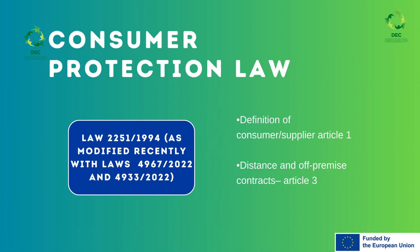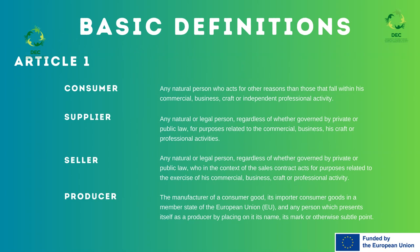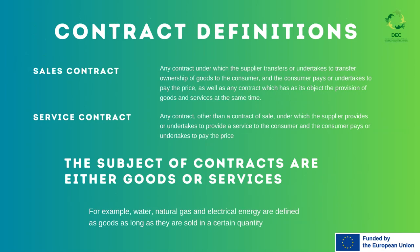There is a law that is up to date in regards to consumer protection. Under this, it includes the definition of the consumer and supplier under Article 1, and the definitions of distance contracts in Article 3. Article 1 provides the definition of the consumer, supplier, seller, and producer. In each case, it is a natural or legal person who serves a cause relevant to the business seeking its interests. The subject of contracts are either for a good or a service. For the goods, the contract is a sales contract and for a service it is a service contract. A service contract is any contract other than a sales contract.